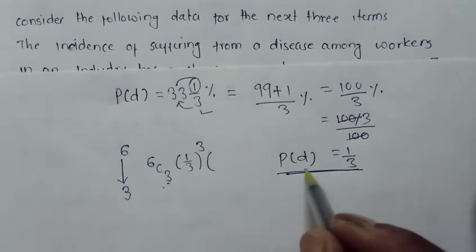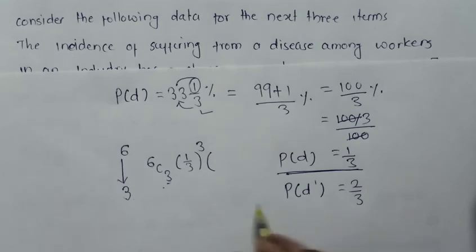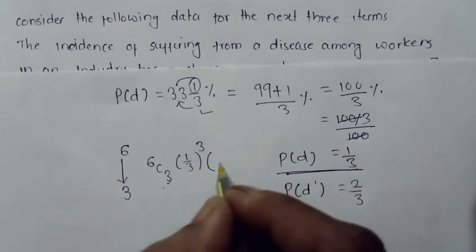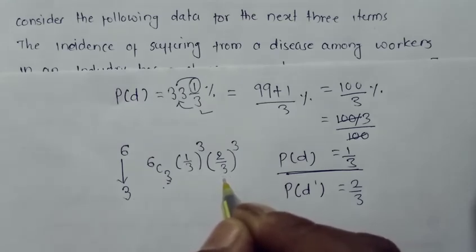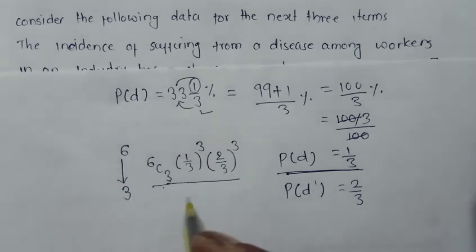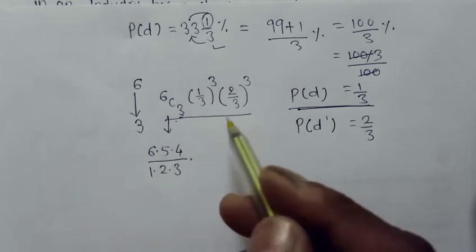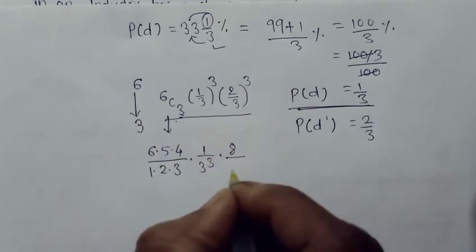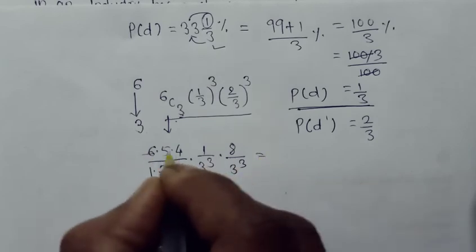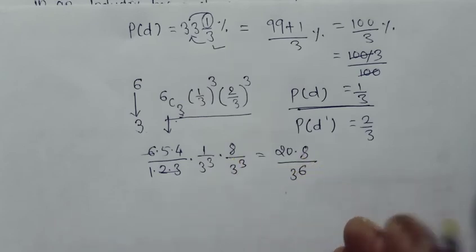Since 3 out of 6 workers are suffering from a disease, the remaining 3 workers will not suffer from it. If the disease probability is 1/3, the probability of no disease is 2/3, which is the complementary event. So the remaining 3 employees contribute (2/3)³. The complete expression is 6C3 × (1/3)³ × (2/3)³. Solving: 6C3 = (6×5×4)/(1×2×3) = 20, and 2³ = 8, divided by 3⁶.